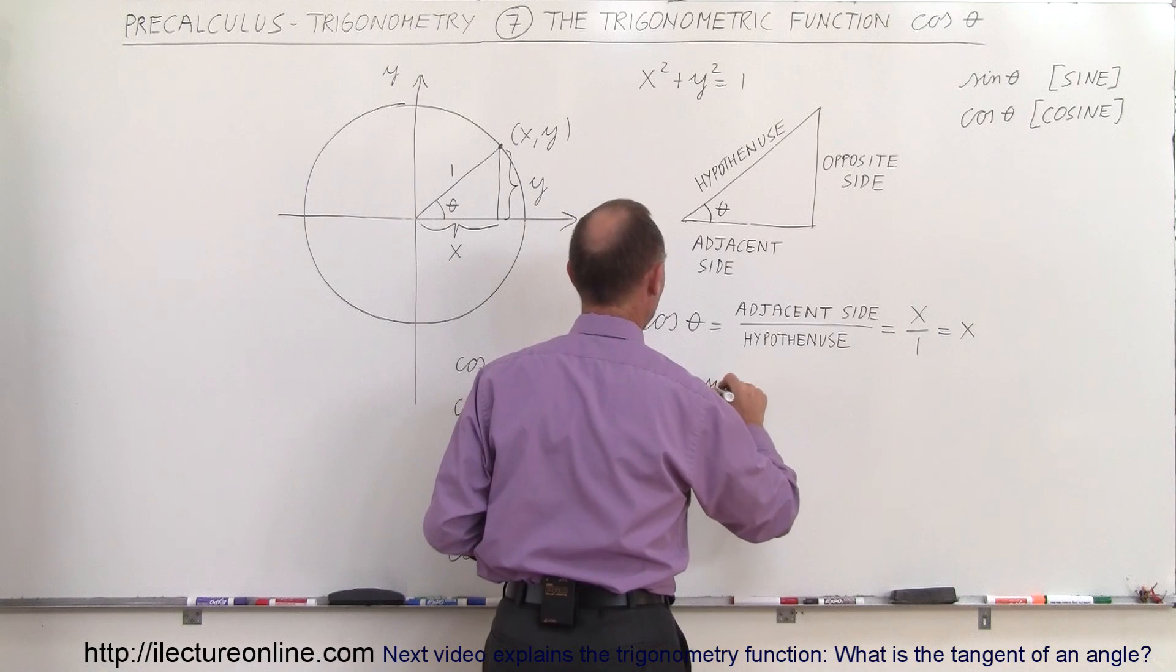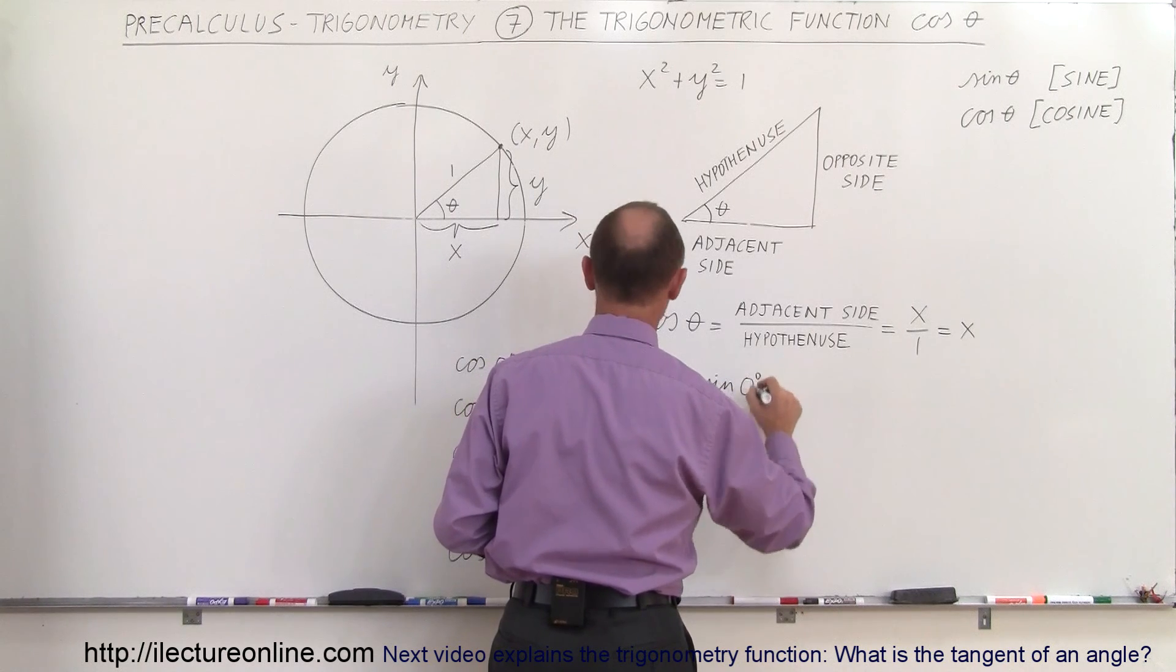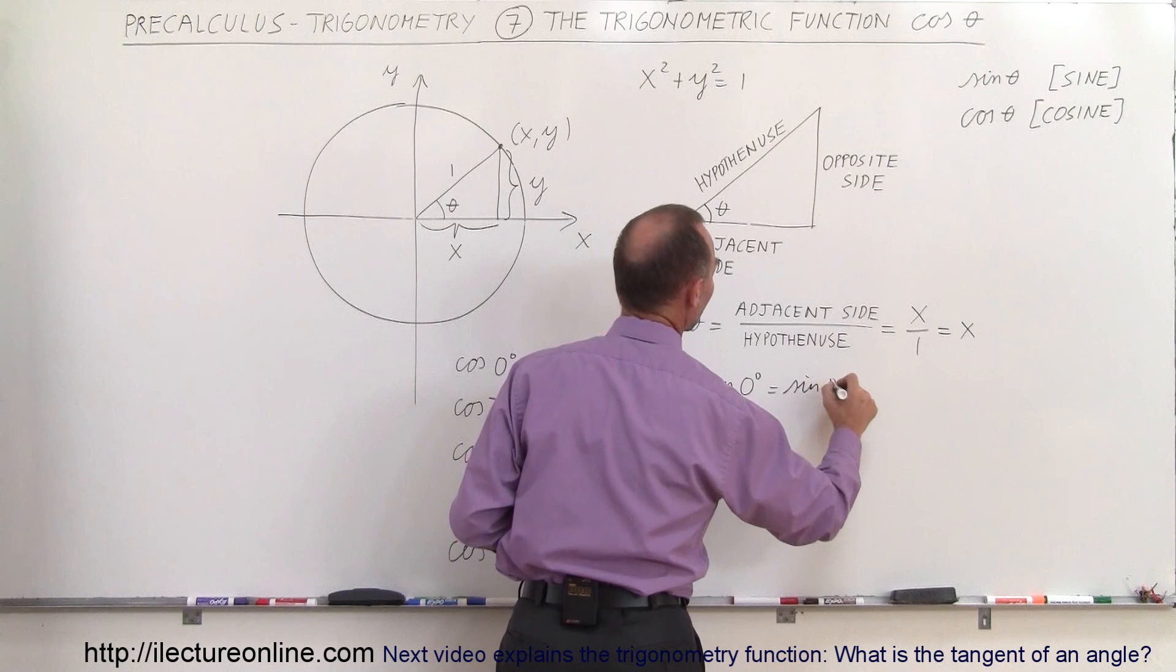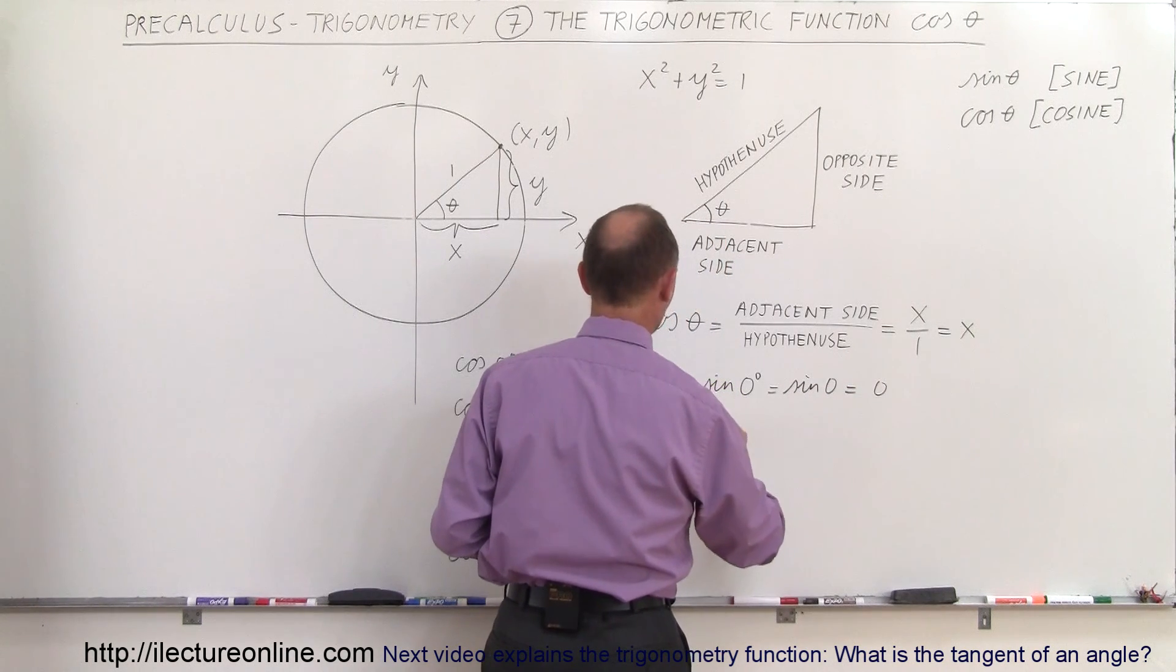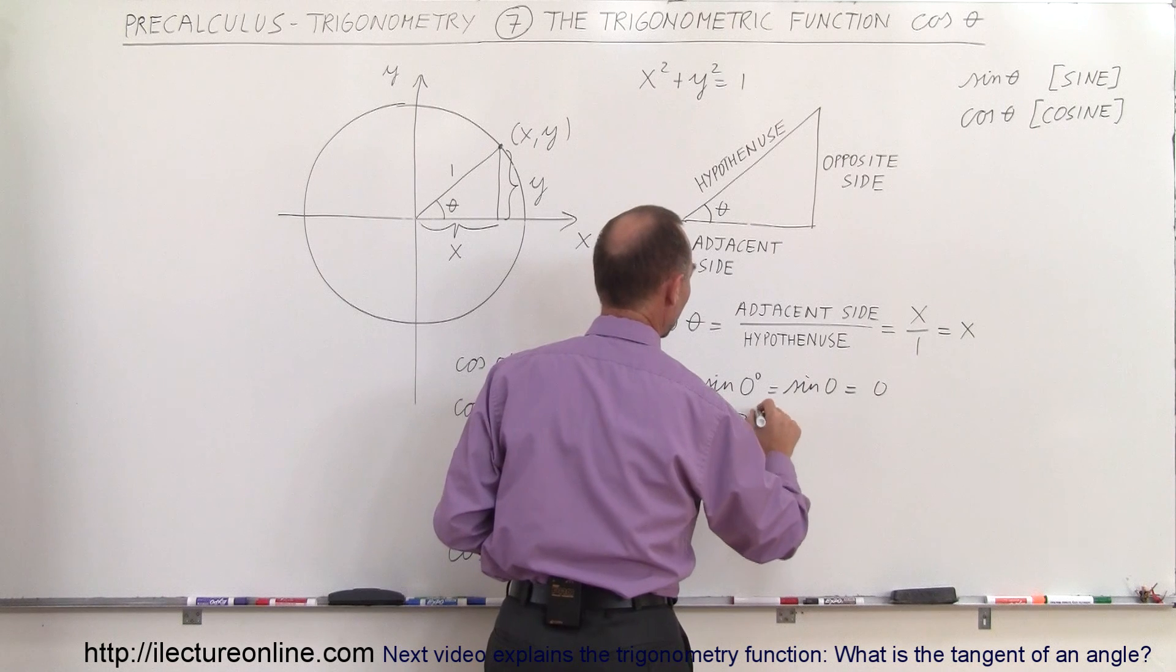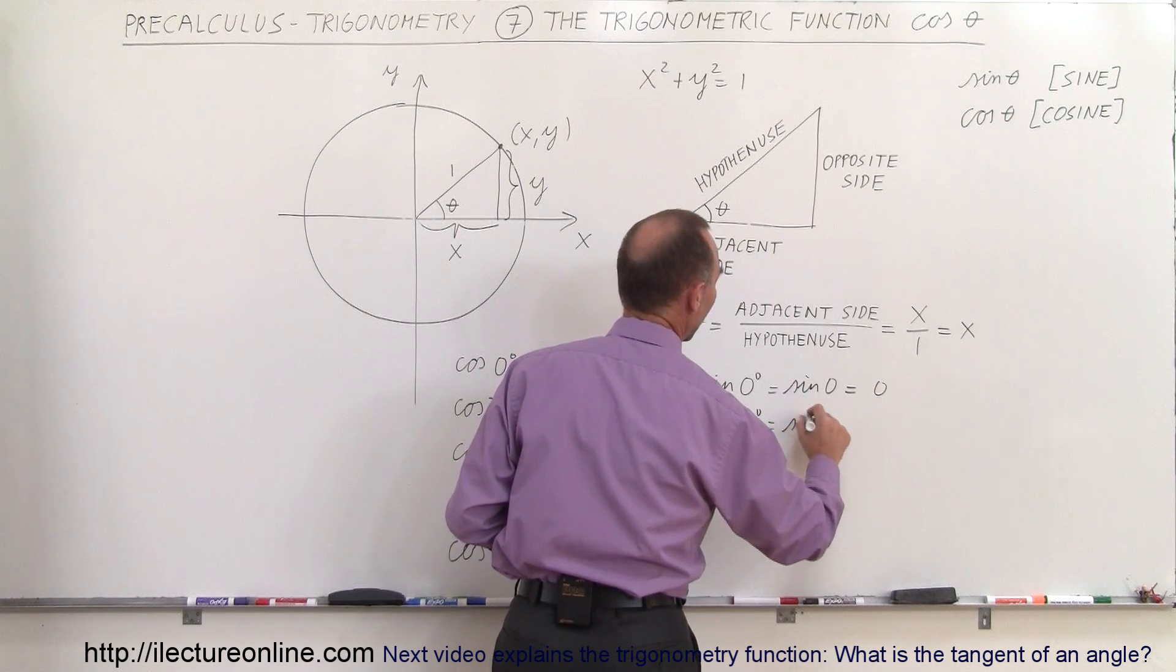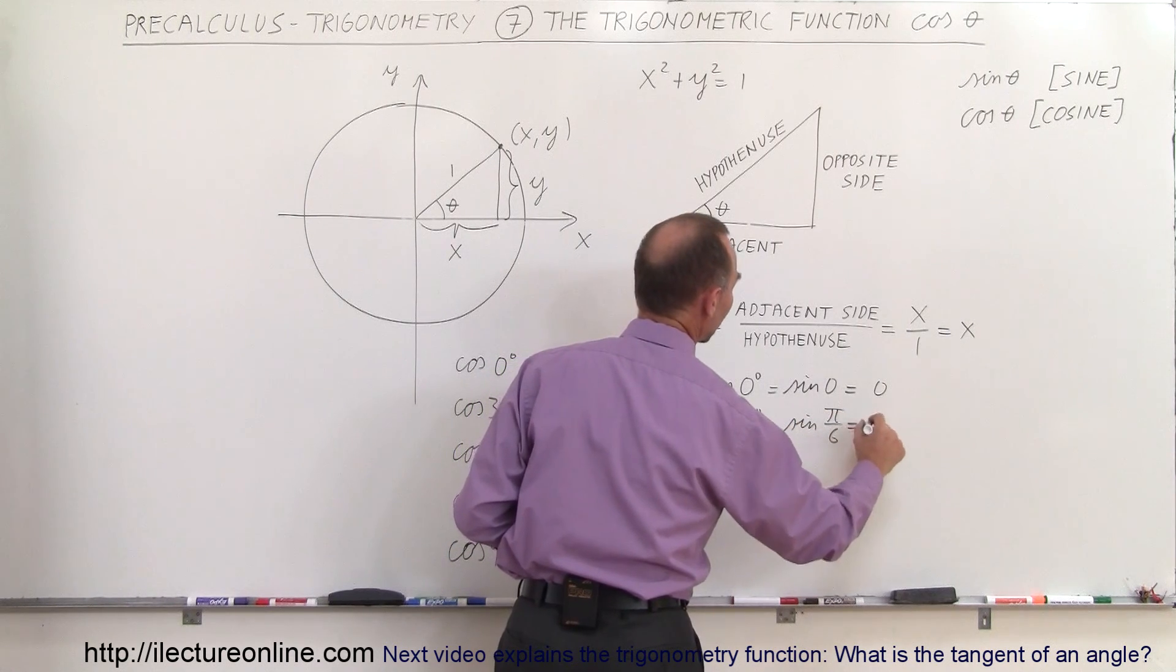You can see that the sine of 0 degrees, which is equal to the sine of 0 radians, which is equal to 0. The sine of 30 degrees, which is equal to the sine of π over 6 radians, that's equal to 1 half.